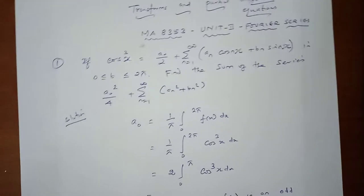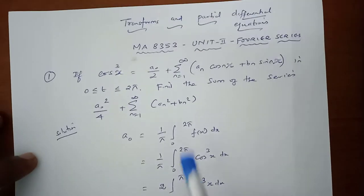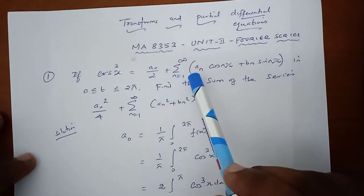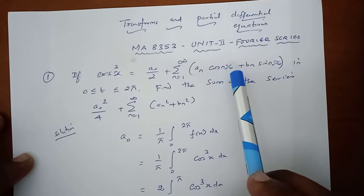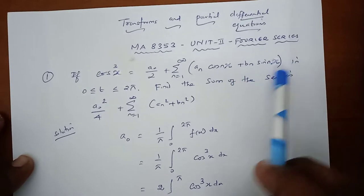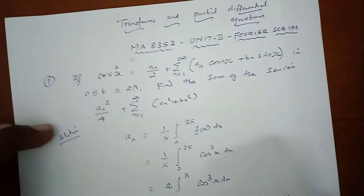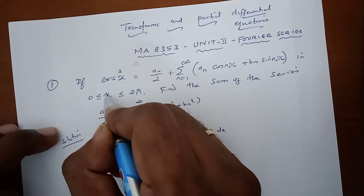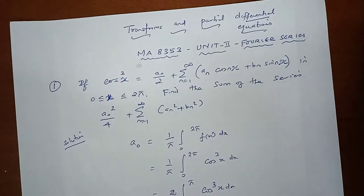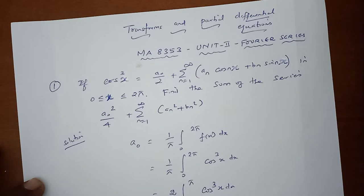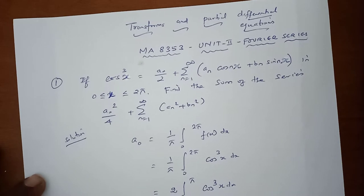Problem number 1: If cos³x equals a₀/2 plus sigma n=1 to infinity of aₙcos(nx) plus bₙsin(nx) in the class interval 0 < x < 2π, find the sum of the series a₀²/4 plus sigma n=1 to infinity of (aₙ² + bₙ²).